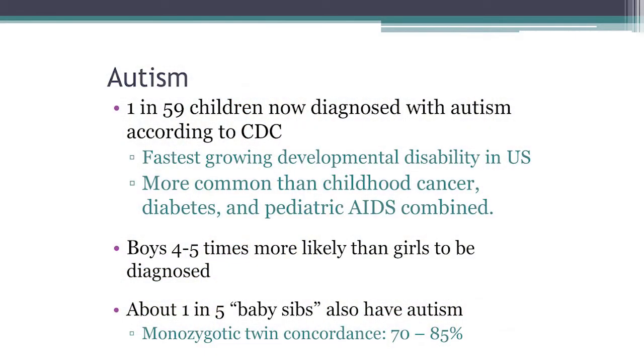One in 59 children at large is diagnosed with autism, but in individuals who have a sibling diagnosed with autism, it's one in five — a huge increase in terms of risk. There's a lot of research happening right now surrounding baby sibs — siblings of individuals with autism — and getting intervention right away based on that risk factor. In monozygotic twin concordance rate, 70 to 85% of identical twins will both have autism or both not have autism. Clearly, there is a huge genetic component to autism.